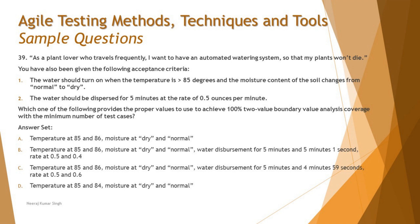For acceptance criteria one, the temperature is greater than 85, meaning up to 85 the water should not turn on, and from 86 it should turn on — using whole numbers. Option A gives temperature at 85 and 86, which are the two boundary values on both sides (invalid and valid), and moisture at dry and normal — dry should trigger watering, normal should not. Option B also has temperature at 85 and 86, moisture at dry and normal, but additionally includes water disbursement for 5 minutes and 5 minutes 1 second, and rate at 0.5 and 0.4.